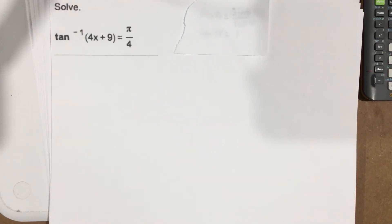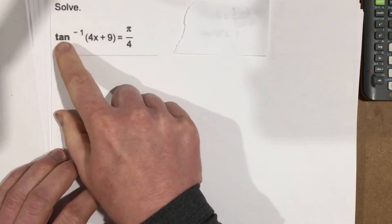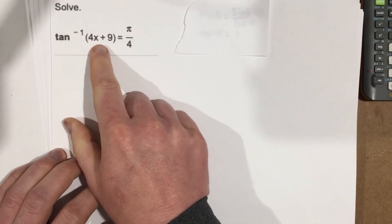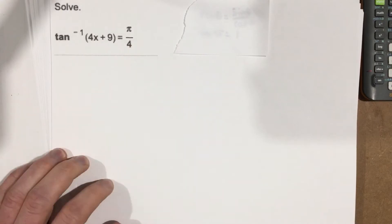This is problem number 7 from section 7.3. This problem asks us to solve tangent inverse of 4x plus 9 equals pi over 4. This problem looks intimidating, but in fact it's not really that difficult at all.